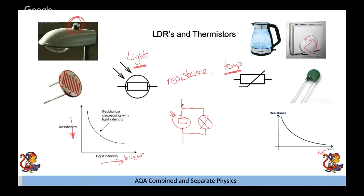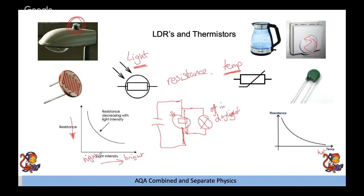At night time there is low light, so the LDR has high resistance. The electricity can't flow through the LDR and instead flows through the bulb, turning it on. For a thermistor, whether it goes in series or parallel depends on whether you want to turn on a cooling device or a heater when temperature changes.